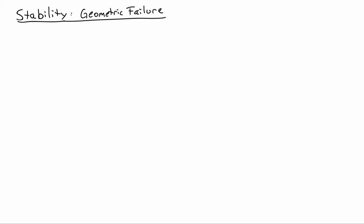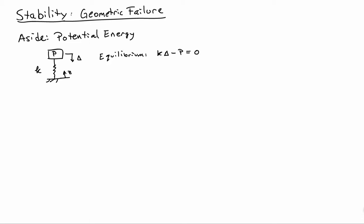Let's remind ourselves about a few things from elementary physics and potential energy ideas. Consider a simple mechanical system where we have a weight p sitting on top of a spring with spring constant k. We measure distance vertically from the bottom of the support by the coordinate z. The spring has some unstrained length z-naught, and when we place the weight on top, the spring compresses by an amount delta. For equilibrium, the spring constant times the deflection delta minus p has to equal zero — that's force equilibrium in the z direction.